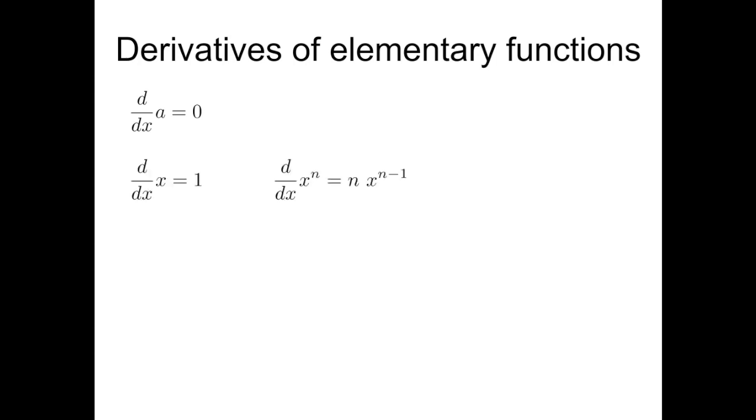In the case of polynomials or straight lines like x or x to the power n, there are simple rules like indicated here. For a straight line, the slope is always constant, and it's basically, in this case, 1, being x the unitary line.